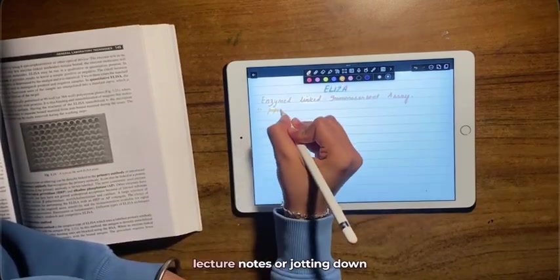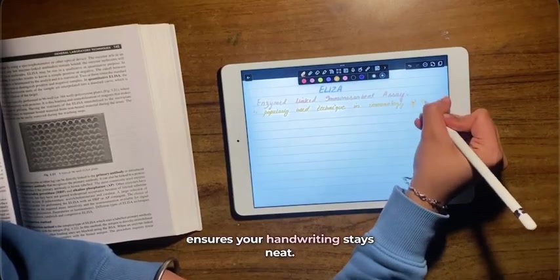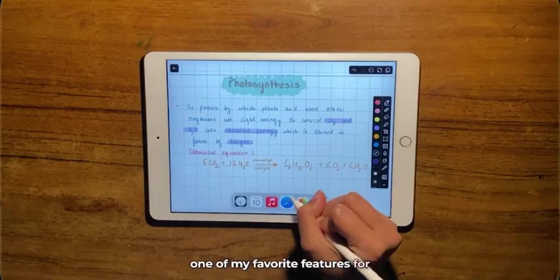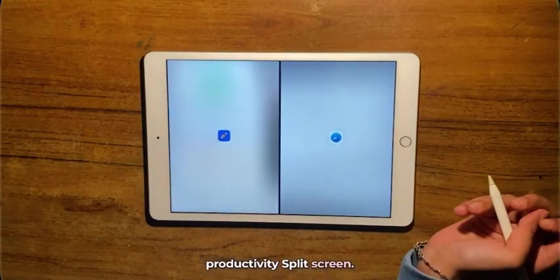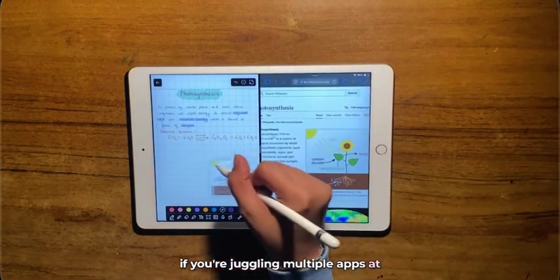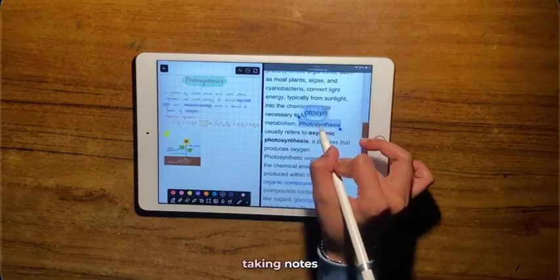Now let's talk about one of my favorite features for productivity: split screen. This is a game changer, especially if you're juggling multiple apps at once. Let's say you're reading an article or a textbook on one side and taking notes in your app on the other side. No more flipping back and forth between tabs or apps, losing your place in the process.